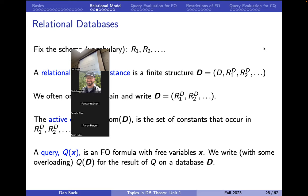In the finite case, we call it the finite satisfiability problem. Even from the general satisfiability question, we have a different theorem — Trakhtenbrot's theorem — which says that checking satisfiability in the finite is co-recursively enumerable. A key distinction between satisfiability in the finite and the infinite is the fact that one is recursively enumerable and one is co-recursively enumerable.